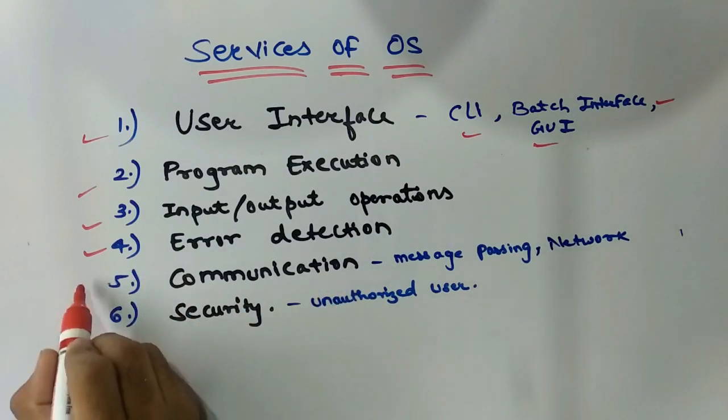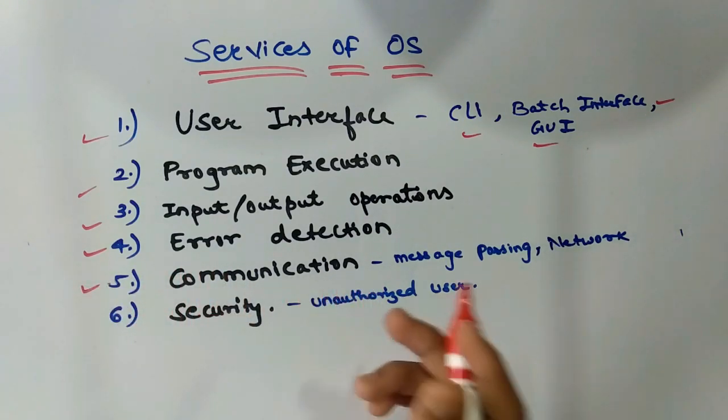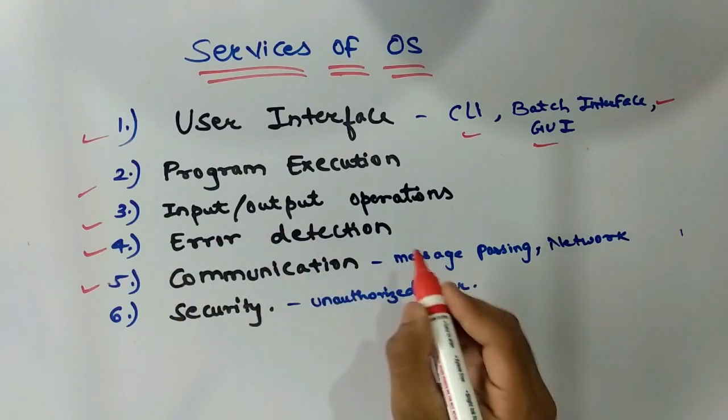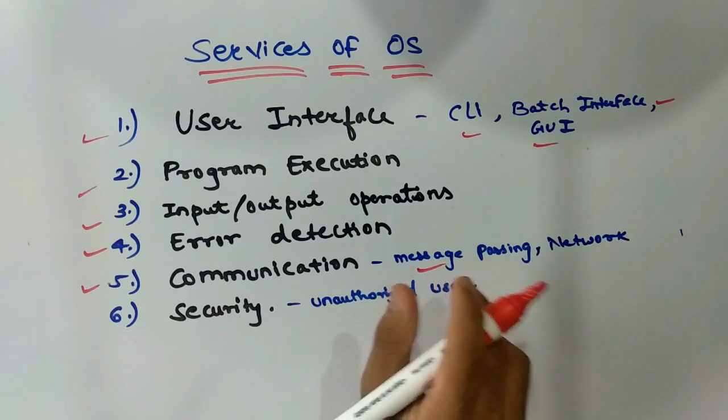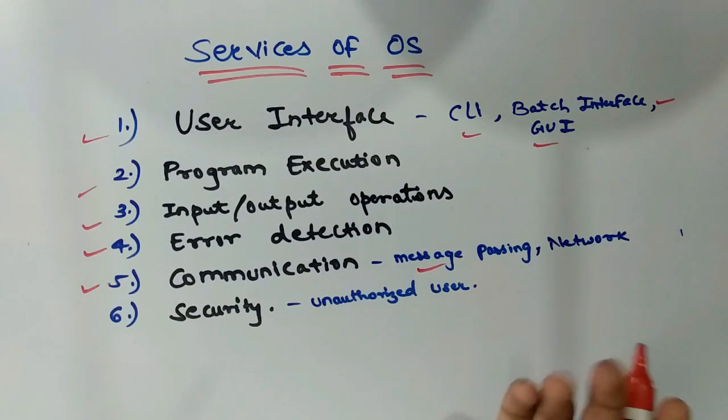Next service of operating system is communication. The communication here refers to the communication that takes place among different processes. Operating system supports message passing facility to ensure that processes communicate with each other and process execution gets done without any hassles. When processes are present on different computers, communication can be done through network.